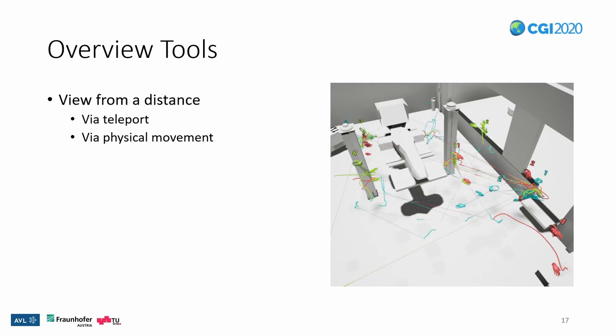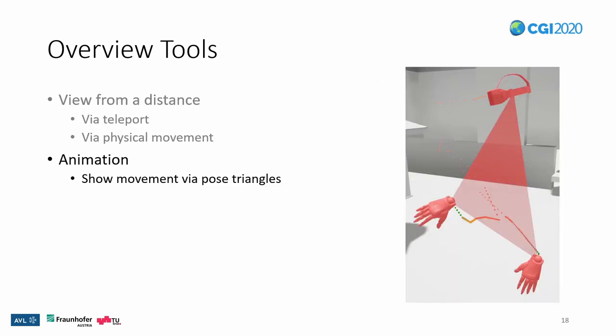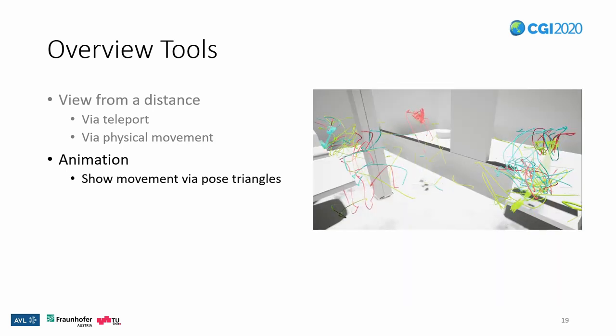We try to give users appropriate overview and detail tools for exploration. Users can simply move farther away from the data to gain a general overview, either by physically moving or by teleporting. Next, users can replay the movement via pose triangles that display head and hands linked together via a translucent triangle. We use this simplified representation to avoid introducing more visual clutter. To show the path of the pose triangle, it leaves a short-lived trail of particles. Through the animation, users can see the speed and order of movement over the whole period.